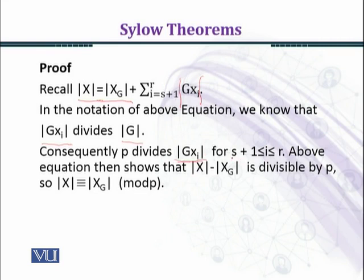For s+1 ≤ i ≤ r, the above equation then shows that |X| - |X_G| is divisible by p. Consequently, |X| ≡ |X_G| (mod p), and we have established this theorem which is very useful and we shall use in establishing different results.